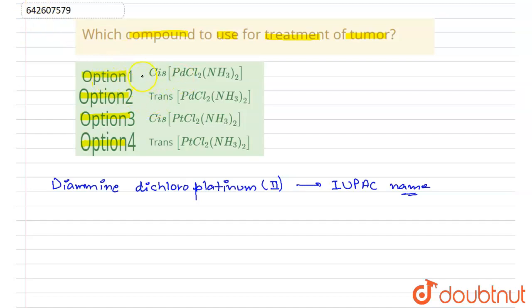If I see my options now, clearly my option number 1 and 2 are removed as these include palladium in their structural formula. Now I have to tell whether it is CIS form or it is TRANS form.